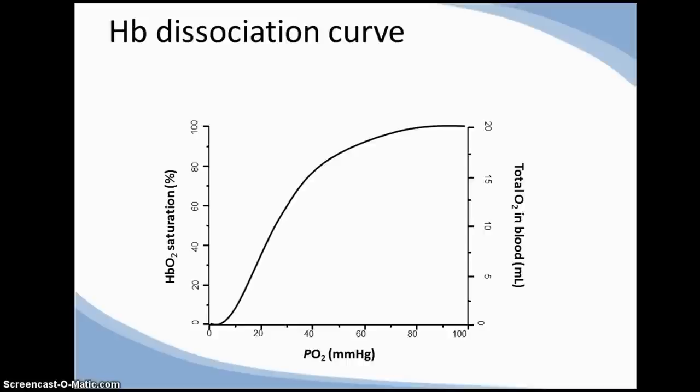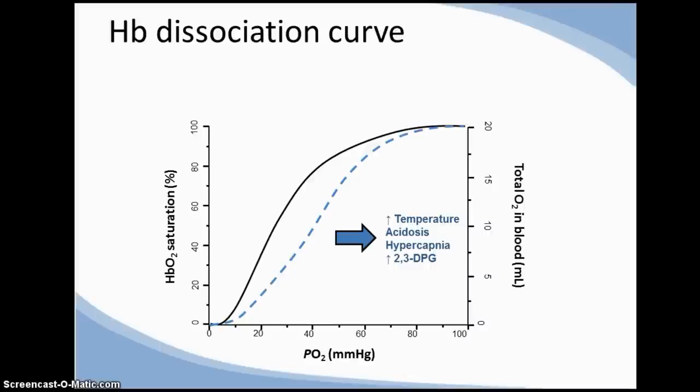The oxygen dissociation curve is sensitive to small changes in the physiological environment. It can be displaced to the right in response to elevated core temperature, a decrease in pH, elevated blood CO2 concentration, and increased 2,3-DPG. This rightward shift promotes oxygen unloading, and perhaps unsurprisingly, each of these factors is associated with exercise.